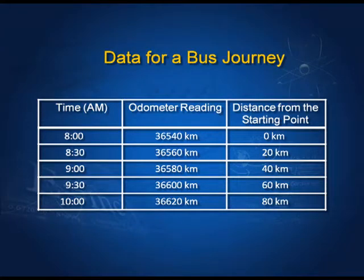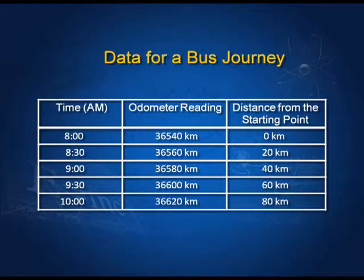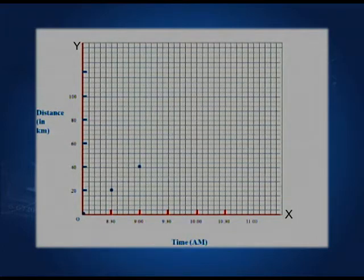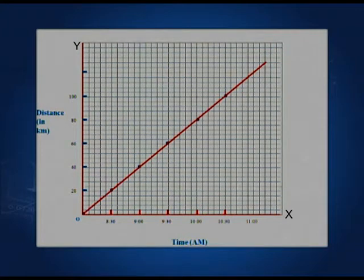Let us draw a graph to illustrate these points using data from the journey of a bus. In the first column we have time — 8 AM, 8:30 AM, 9 AM, 9:30 AM and so on. The last column has distance from the starting point: 0 km at 8 o'clock, 20 km at 8:30, and so on. On the y-axis we take distance (the dependent variable) and on the x-axis we take time (the independent variable). We draw each point and then join all points by a line — this line is the graph between distance and time.